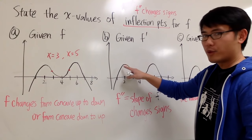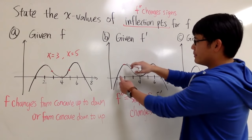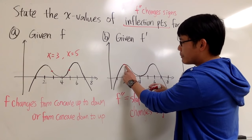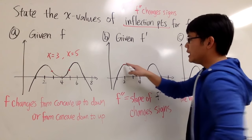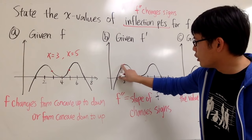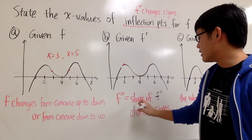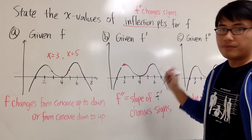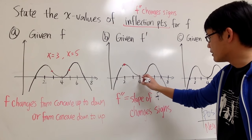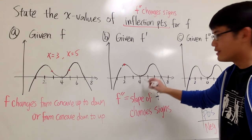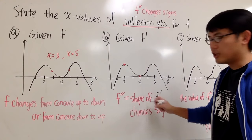Because we are looking for where the slope changes signs, we have to look for the ups and downs. Where is it changing from going up to going down? At x=2, because the slope from here up to 2 is positive, and after 2 it drops down and becomes negative. So the slope changes sign at x=2. Then going down and then going up — that's another place where the slope changes sign.